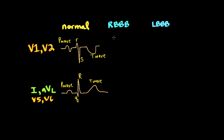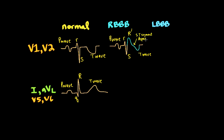Now let's look at the right bundle branch block in V1 and V2. The P wave and PR segment are normal. Since the left bundle branch is intact, we have normal septal forces and LV free wall forces. But due to asynchrony, there is a delay in right ventricle forces, represented as an additional wave — an R prime. The ST segment is depressed and the T wave is inverted. These are secondary ST segment T wave changes, characteristic of right bundle branch block in V1 and V2.